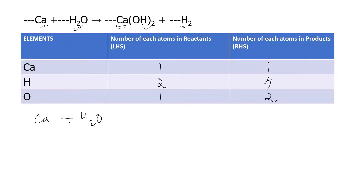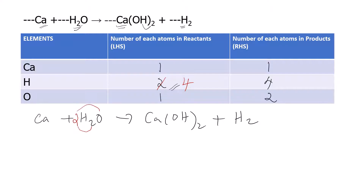For oxygen, the reactant side has one and the product side has two. So we write Ca + H₂O gives Ca(OH)₂ + H₂O, and put coefficients to balance. Putting 2 in front of H₂O makes two times two equal four hydrogens, balancing hydrogen. This also makes the oxygen count two on both sides. Calcium was already balanced at one, so the equation is fully balanced.